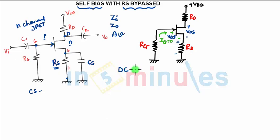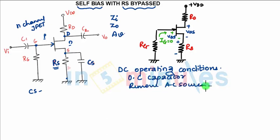Under DC operating conditions, we open circuit the capacitors and remove AC source. So when the capacitors are open circuited, this part will go, this part will go, and this part will go.